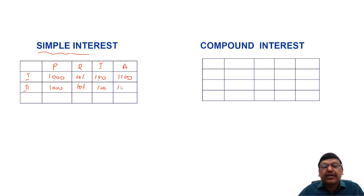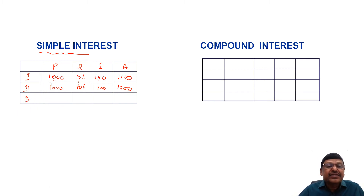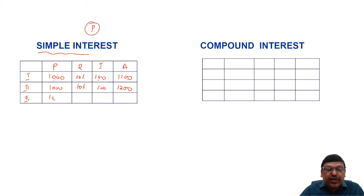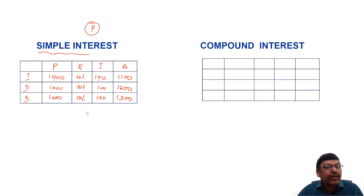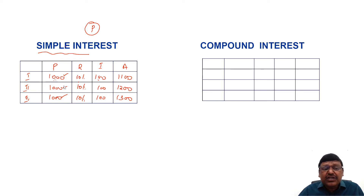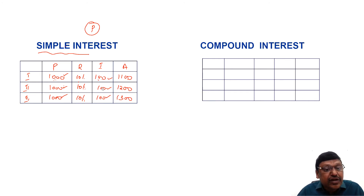For the third year, as I said, in simple interest, interest is calculated only on the initial sum — on 1000 at 10 percent giving 100 — so the total amount will be 1300. Here interest is always calculated on the initial sum, so interest for any one year is the same: first year 100, second year 100, third year 100.